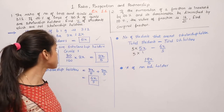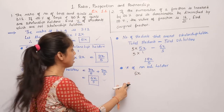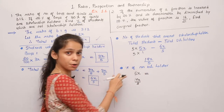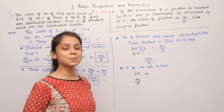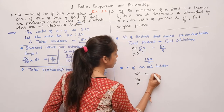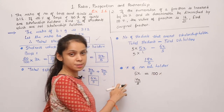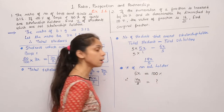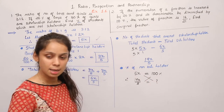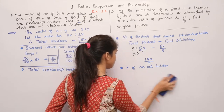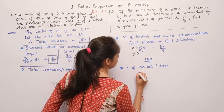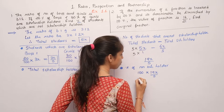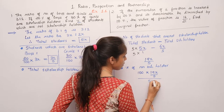Percent of non-scholarship holders: total students in the class are 5x, and non-scholarship holders are 19x divided by 5. If we consider 5x as 100% (since total students always represents 100%), then 5x equals 100%, and we need to find what percentage 19x by 5 represents. By cross multiplication: 100 into 19x upon 5, divided by 5x.